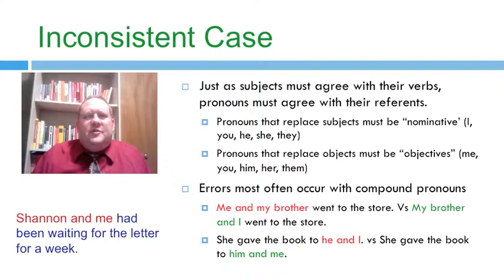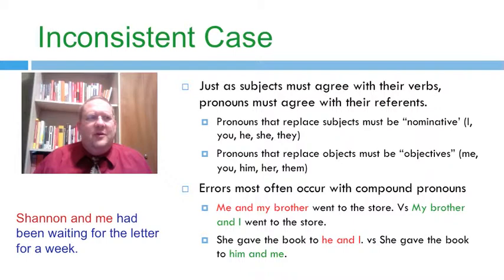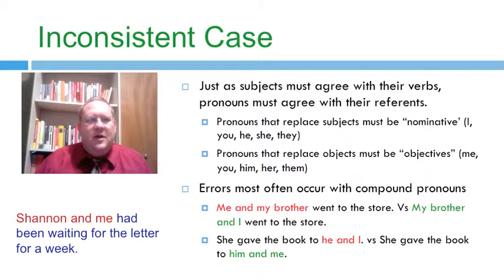Just as subjects must agree with their verbs, pronouns have to agree with their reference — the nouns that they are standing in place of — and sometimes this can be tricky. There are several different cases of pronouns: possessive pronouns like his, hers, and its; and reflexive pronouns such as myself, himself, herself. But the two that usually end up causing confusion are the nominative and the objective pronouns.